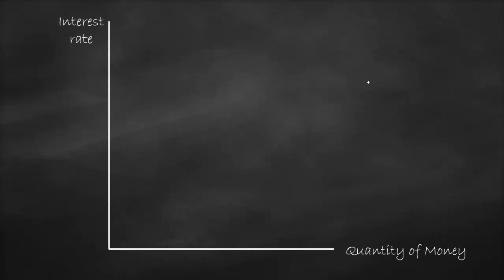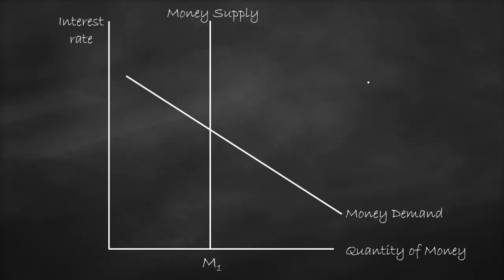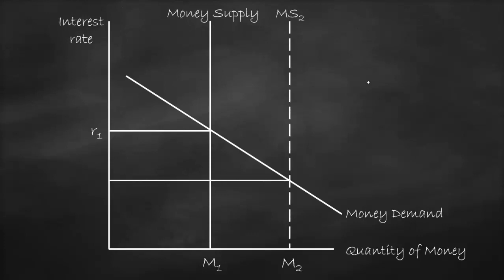Let's draw this on a graph. The x-axis is the quantity of money and the y-axis is the interest rate. We have a downward-sloping money demand curve, meaning there is an inverse relationship between interest rate and demand for money — if interest rate is high, people prefer to put more money in the bank to benefit from a higher return, and vice versa. Money supply is always vertical. The intersection of money demand and money supply gives us R1 and M1. If the RBA increases money supply, the supply curve shifts to the right to MS2, giving a new intersection at R2. As we can see, if we increase money supply, our interest rate will decrease.